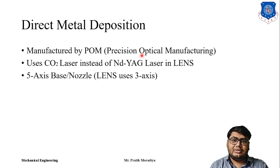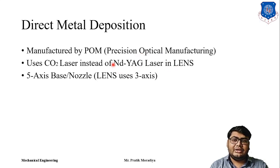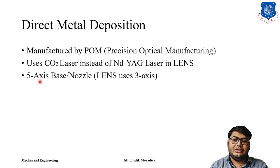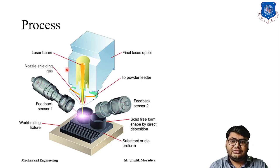In LENS we use Nd:YAG lasers, but in DMD we use CO2 lasers instead. Also, in LENS we use three-axis platforms, but in direct metal deposition we use five-axis machines. You can control the motion of your part in five different axes, which gives you more flexibility in terms of design and allows you to produce more complex parts very easily.